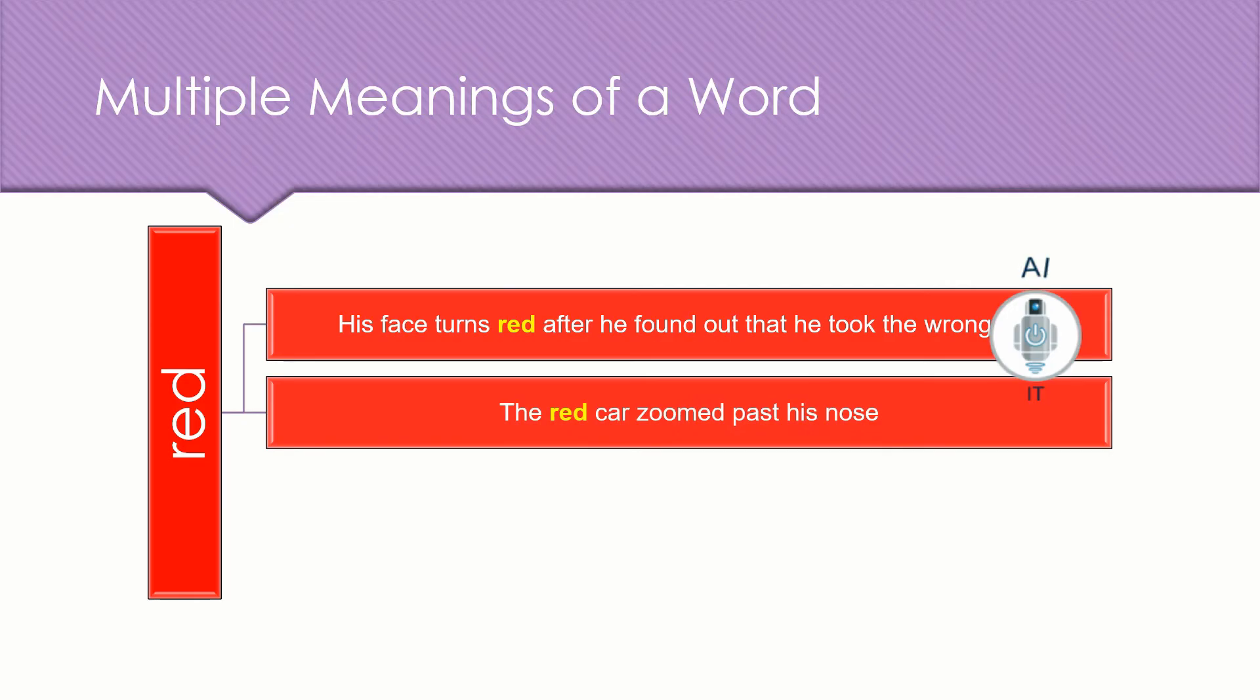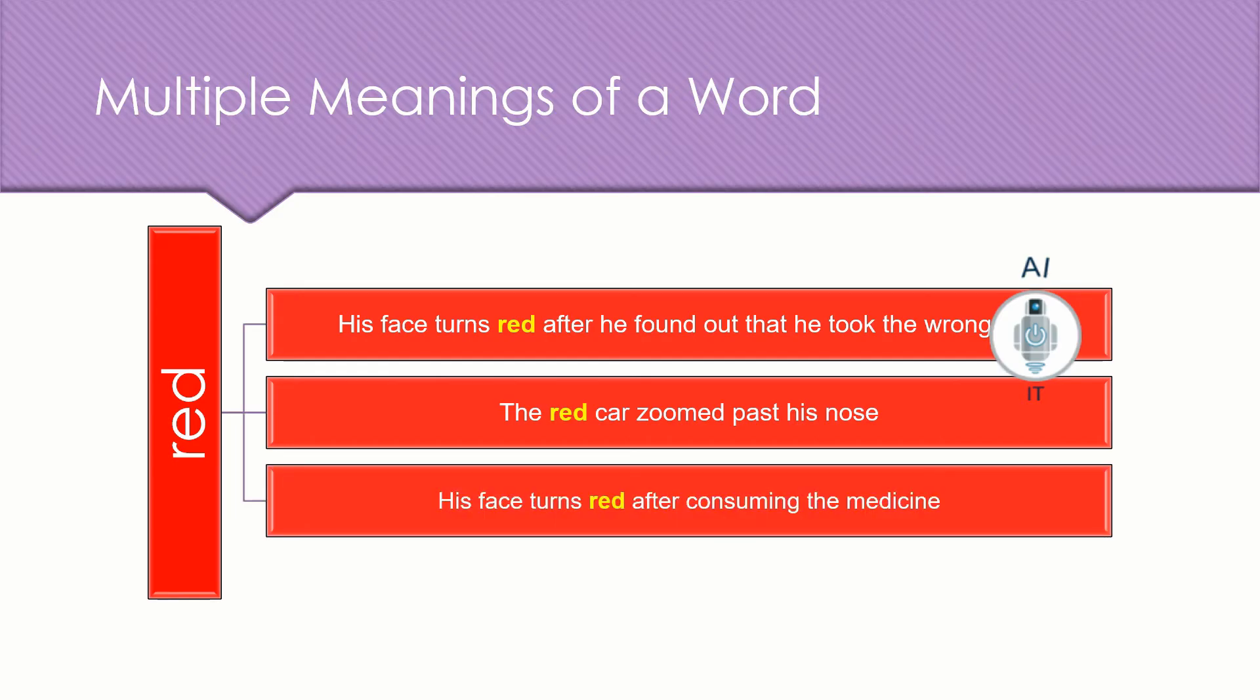If you look at another example of the same word red in another sentence, the car zoomed past his nose. Are we talking about the color of the car? Or are we talking about the speed of the car? Again, the meaning varies.